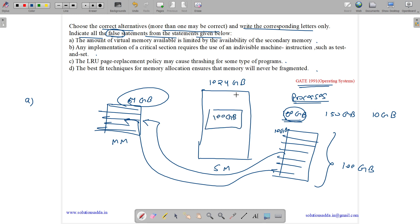But this entire process needs to be in secondary memory 100 GB. Which means this 1024 should be at least greater than 100 GB. Which means secondary memory size should be at least greater than equal to process size, or basically all processes size. So the amount of virtual memory which means the size of process available is limited by availability of secondary memory. Yes, this is true.